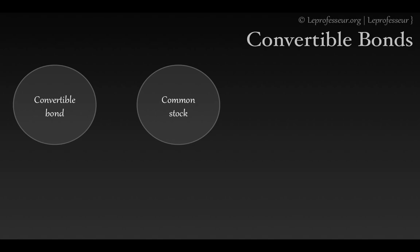If we combine the concepts of a regular bond and a common stock, we arrive at something called a convertible bond. A convertible bond means you can convert it into shares of the company at any time. There is a conversion price — for example, if the stock trades at $40, the conversion price might be set at $60.